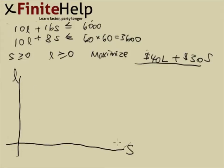And it doesn't matter which axis is s, which axis is l. s greater than or equal to 0 is the l axis. So this is basically everything to the right. And then l is greater than or equal to 0 is everything above. So we're looking at just this area.